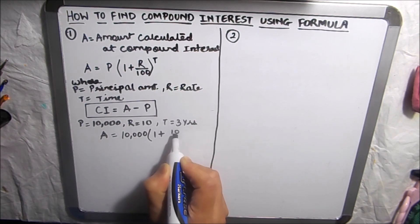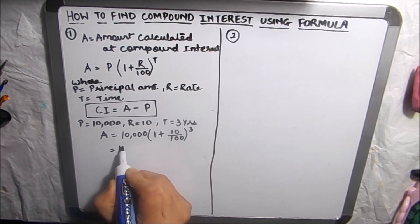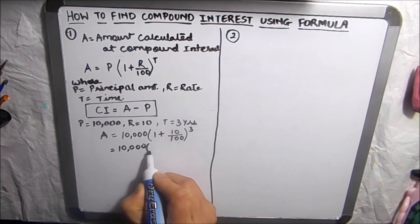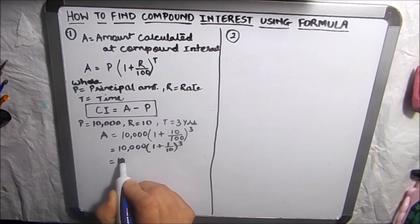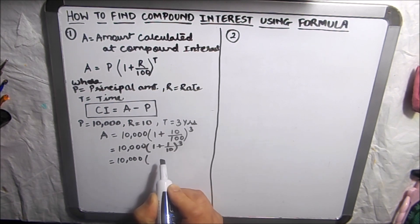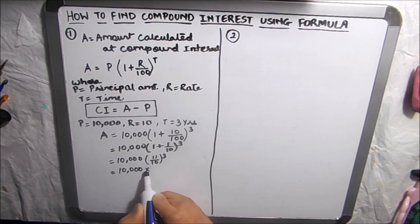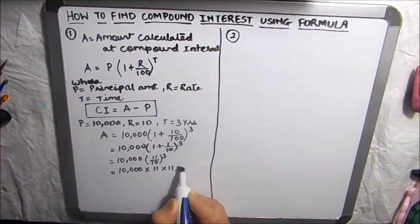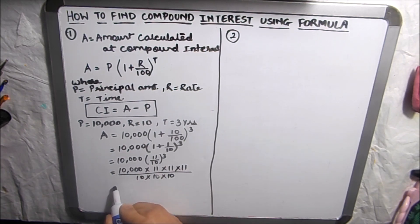So: 10,000 × (1 + 10/100)^3. Let's solve this: 10,000 × (1 + 1/10)^3, which is 10,000 × (11/10)^3. Since it is cubed, we multiply 11/10 three times, and the three zeros in 10,000 get cancelled.